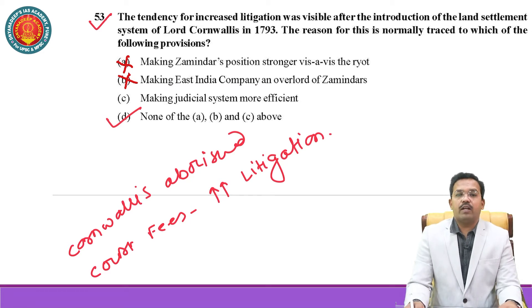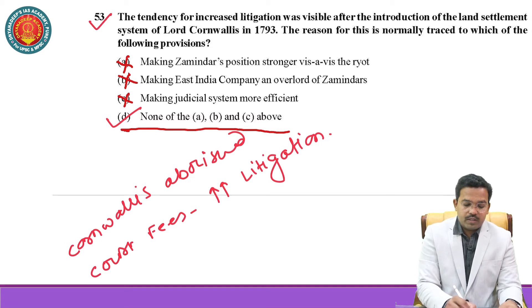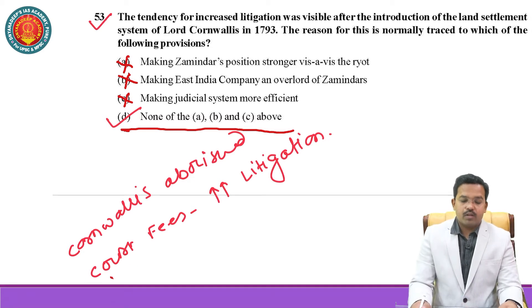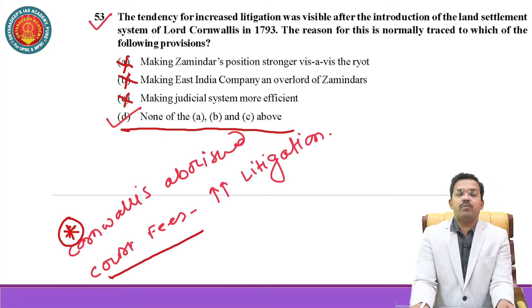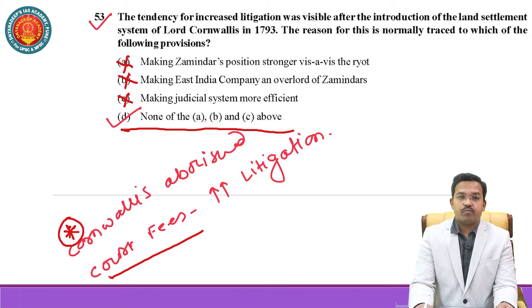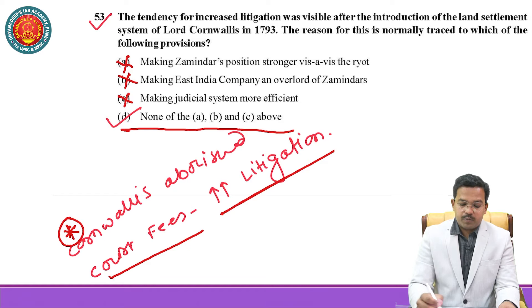Third option — making the judicial system more efficient — if the judicial system is made more efficient, obviously it will not lead to an increase in litigation, so option C is eliminated. None of A and B is correct either, because the actual reason is that Cornwallis abolished court fees. This was a very important decision, and this abolition of court fees was responsible for increased litigation. So Lord Cornwallis had abolished court fees, and that was responsible for increased litigation in the region.